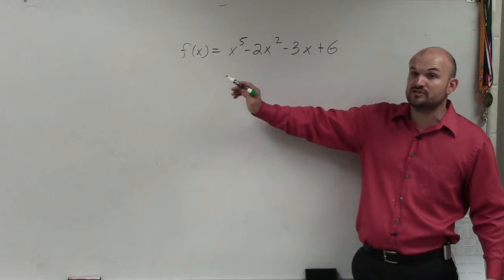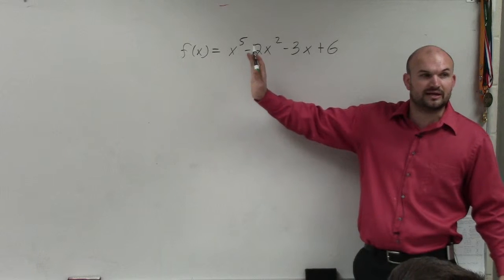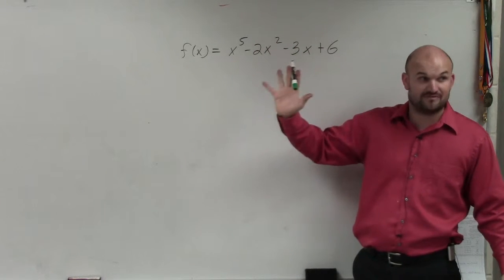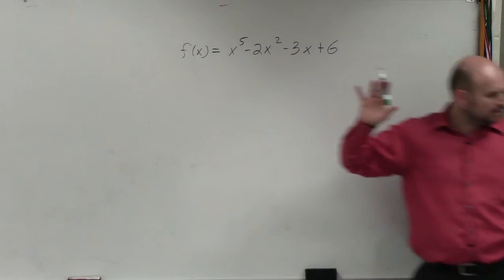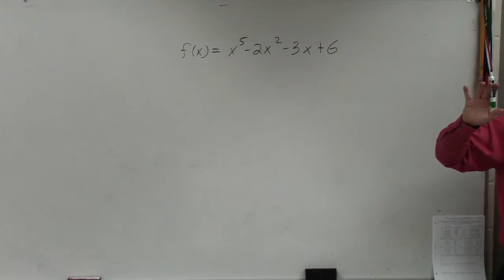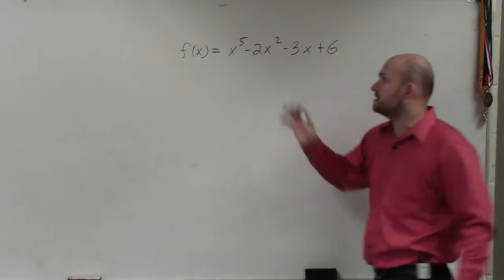So the fundamental theorem of algebra, first of all, tells us how many total zeros are we going to have? Five, right? Those could be real, complex, or whatever. Oh, I forgot to answer those questions. We'll have to go through at the end. We'll finish this.